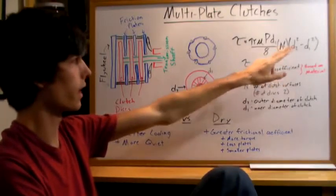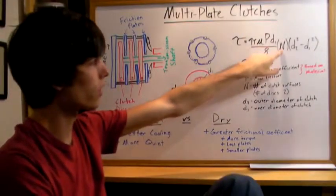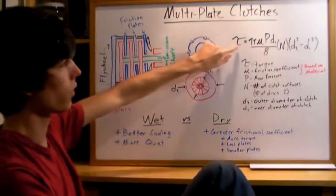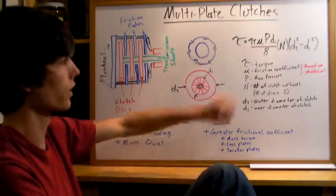And then you've got the outer diameter squared minus the inner diameter squared. So as you can see, if you increase this n, you can increase the maximum amount of torque that you can load onto the clutch that it can transmit.